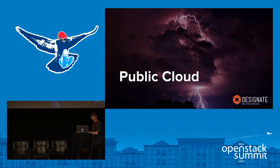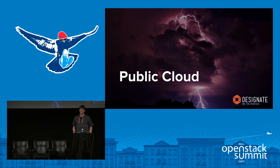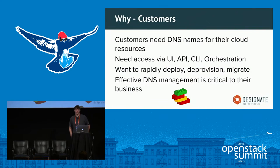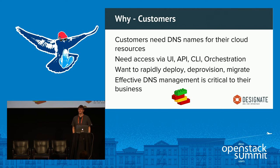Assuming you've already stood up your public cloud, I'm going to tell you why you might need DNS as a service and why you should use Designate. First, your customers are going to want DNS names for all of their cloud resources — floating IPs, instances, Trove, Swift buckets — all that stuff. They're not going to want to address things by IP address.